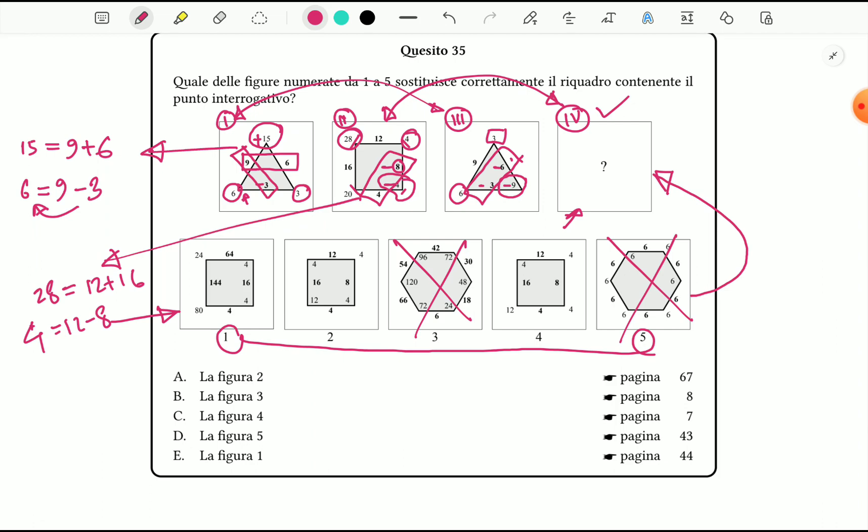For the first option, we can see a number 80, but here 144 is negative and 4 is positive. The number on the vertex should be, according to our relation, minus 40, but it's 80. Therefore, this object 1 cannot be our answer, so we cross it out.